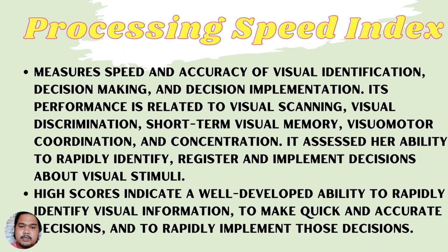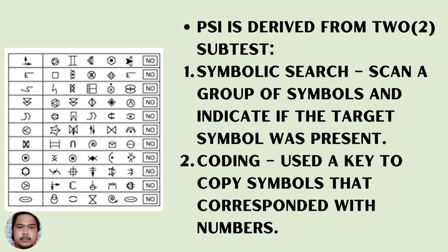The PSI assesses the ability to rapidly identify, register, and implement decisions about visual stimuli. High scores indicate a well-developed ability to rapidly identify visual information and make quick and accurate decisions. PSI is derived from two subtests: symbol search, where the child scans a group of symbols to indicate if the target symbol is present, and coding, where the child uses a key to copy symbols that correspond with numbers to identify a message. That will be all — thank you.